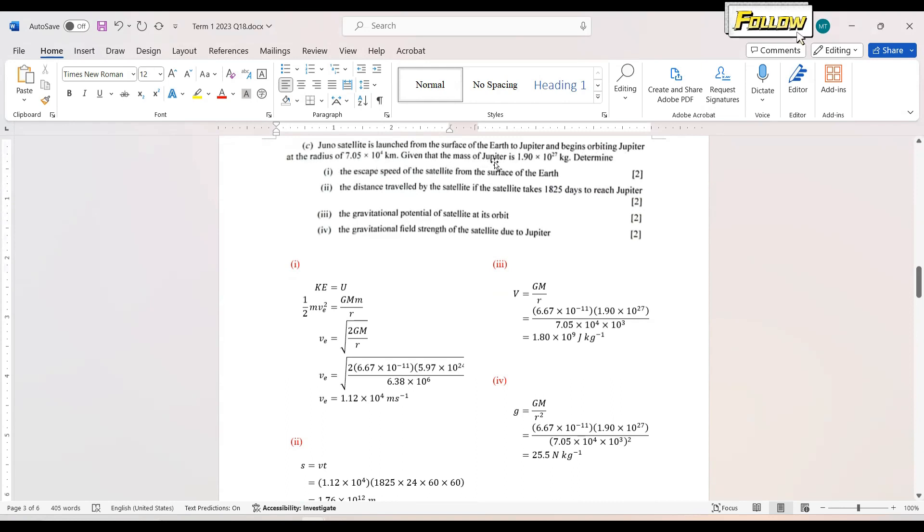And you are given the mass of Jupiter. First is to determine the escape speed of the satellite from the surface of the Earth. So this is quite simple because we have learned it. So in case you forget about the formula...